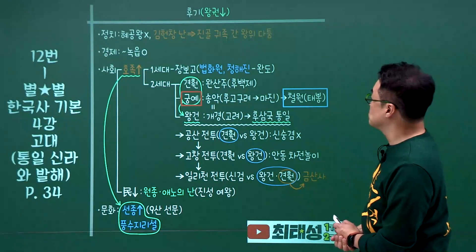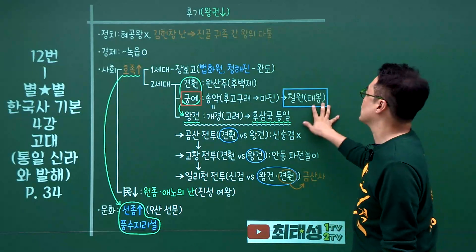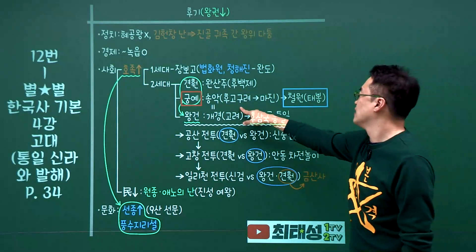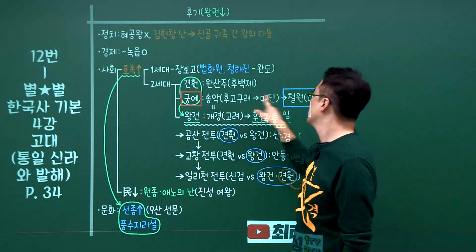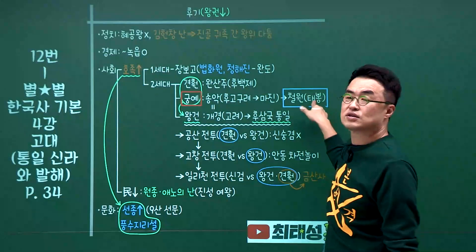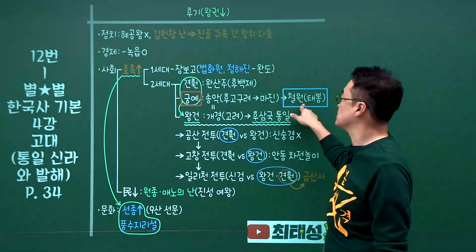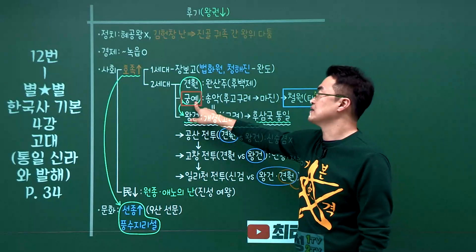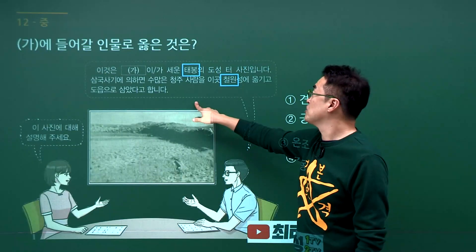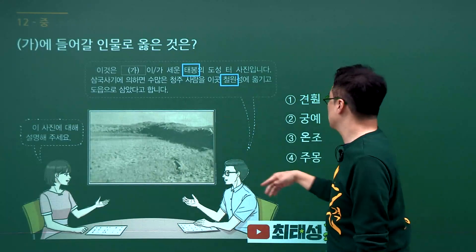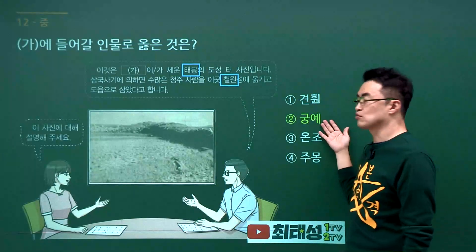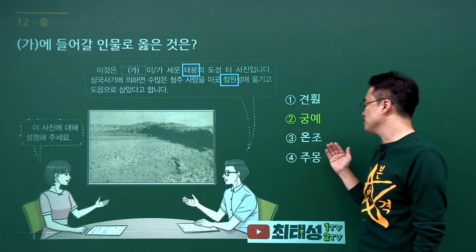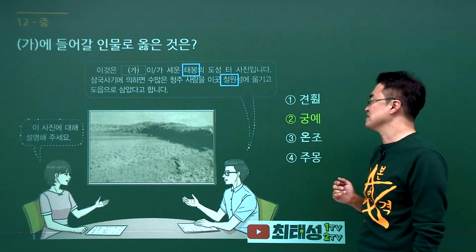후삼국 시대 문제입니다. 철원과 태봉이 나왔습니다. 태봉이라는 나라의 도읍지를 철원으로 정했던 인물은 궁예입니다. 문제에서 태봉과 철원이 나왔으니 궁예를 고르시면 됩니다. 견훤은 후백제, 온조는 백제, 주몽은 고구려입니다.